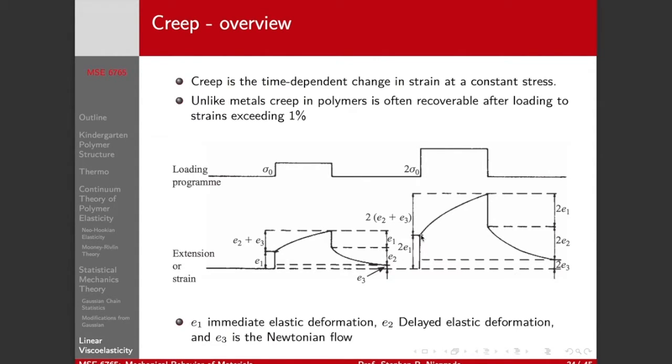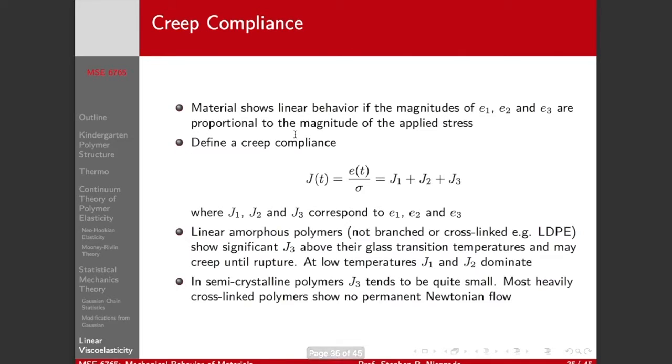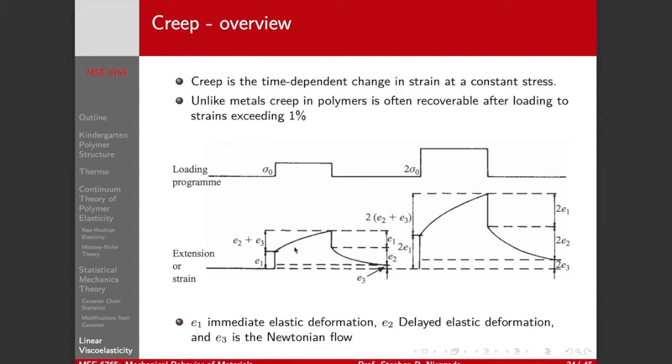Now, since it's a linear viscoelastic material, if we add twice the stress, we get twice the initial elastic response, our creep rate is exactly twice as fast, so that our total strain at the end of the creep regime is twice as high. We recover our elasticity and relax, and we end up with twice the irrecoverable deformation. If it's a linear viscoelastic material, I can simply take this curve and scale it for any stress value. And so that allows us to define a creep compliance.